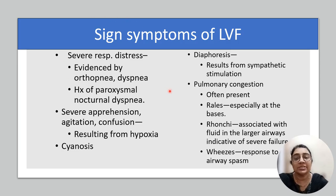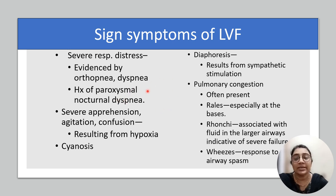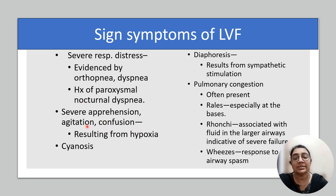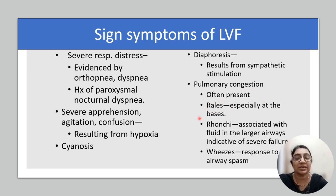Signs and symptoms of left ventricular failure: severe respiratory distress occurs due to increased pressure in pulmonary veins and capillaries, and increased pulmonary edema and congestion. Evidence of orthopnea, dyspnea, history of paroxysmal nocturnal dyspnea, severe apprehension, agitation, and confusion resulting from hypoxia and cyanosis. Diaphoresis can occur resulting from sympathetic overactivity. Pulmonary congestion is often present with rales, ronchi, and wheeze. These are all signs and symptoms of left ventricular failure.